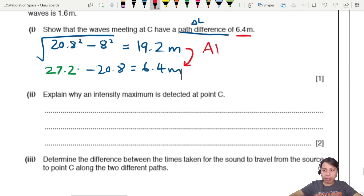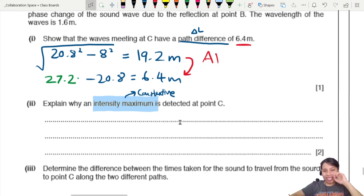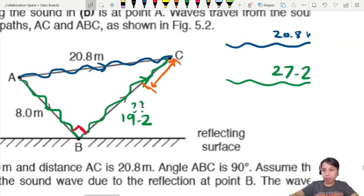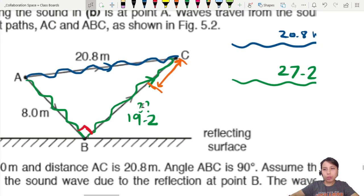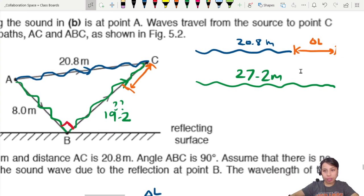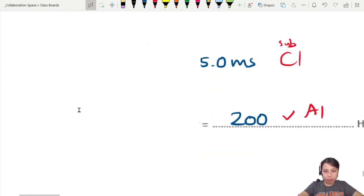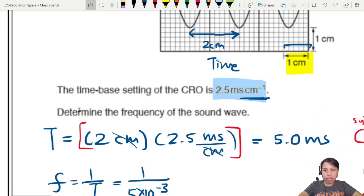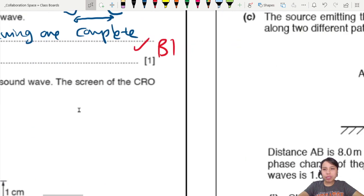Explain why intensity maximum is detected at point C. Intensity maximum, when you see this phrasing, they are really talking about constructive interference. So they're asking you, why is it constructive at point C? So we kind of have to go zoom into this. So how do you know if it's constructive or not? You have to check the path difference. So one way of travel a bit further, right? This one, in terms of lambda, what is the path difference?